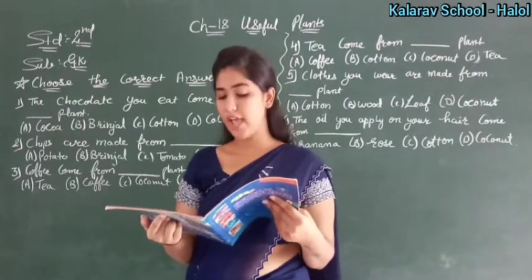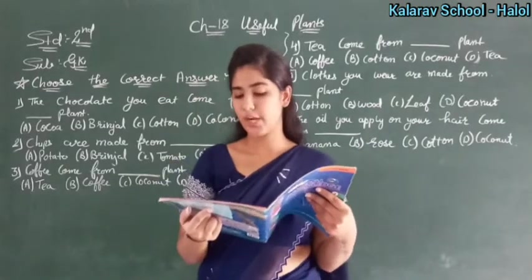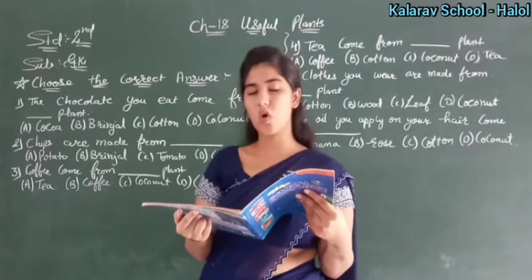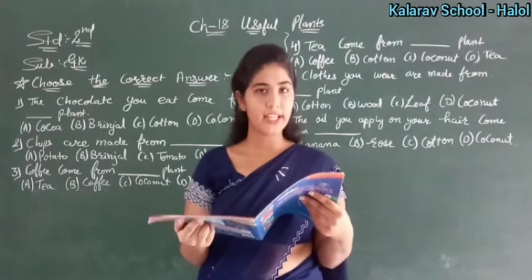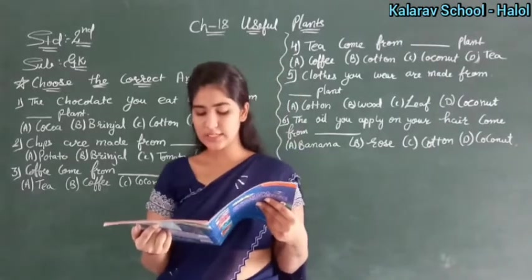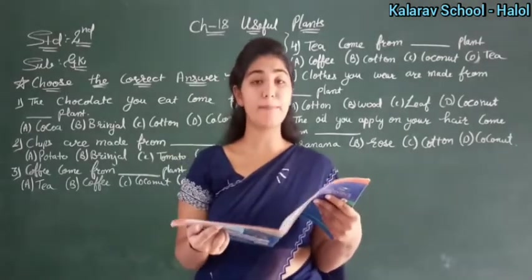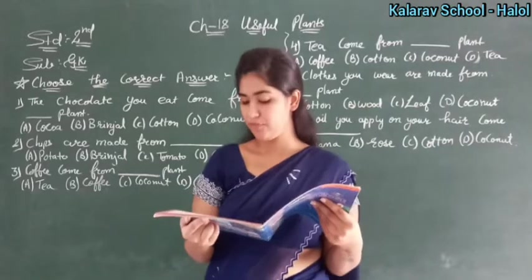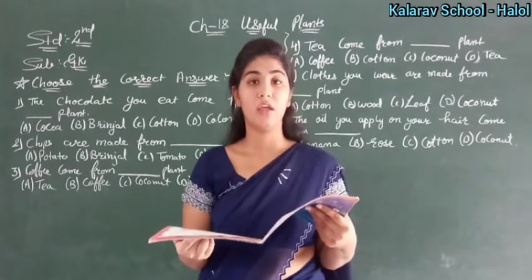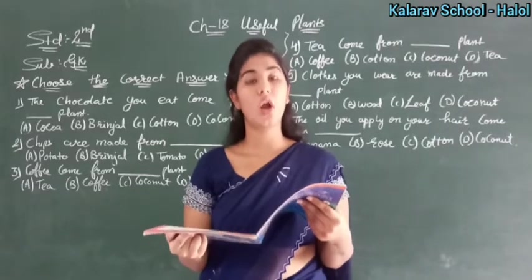Chips are made from potato. Oil you apply on your hair comes from coconut. Spinach that we eat is the leaf part of a plant. The clothes we wear are made from fabric, and that fabric comes from the cotton plant.